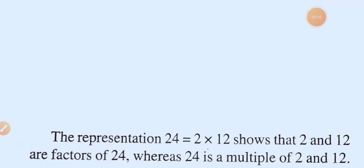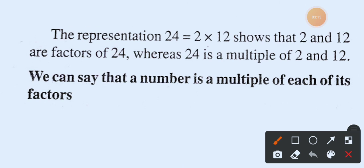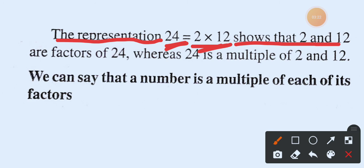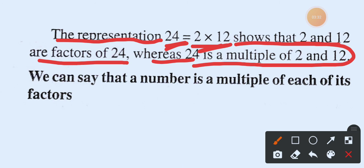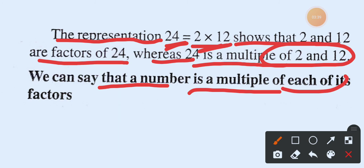Now we move to multiples. Look at the representation: 24 = 2 × 12. So two and twelve are factors of twenty-four. We can say that twenty-four is a multiple of each of its factors.